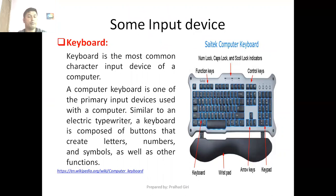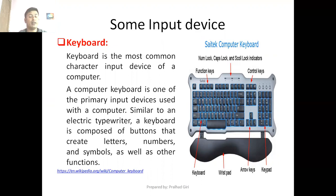Now let us discuss some of the input devices available in a computer system. The first one is the keyboard. Keyboard is the most common character input device of a computer. It is one of the primary input devices used with a computer system. Similar to an electric typewriter, a keyboard is composed of buttons that create letters, numbers, and symbols as well as other functions. When you press certain keys, electric signals are sent to the computer system as input.